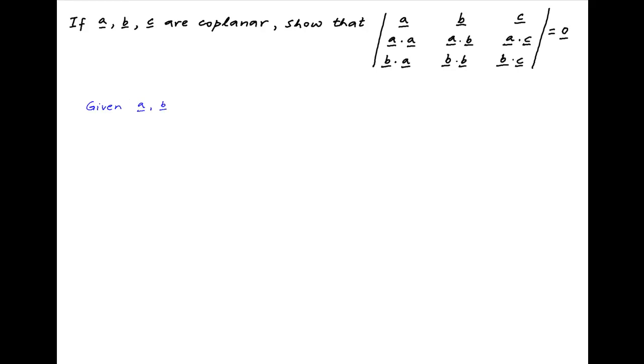We are given that vectors a, b, and c are coplanar. This means that there exist scalars x, y, and z, not all equal to 0, such that x times vector a plus y times vector b plus z times vector c is equal to the null vector. Let's call this equation 1.